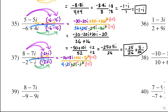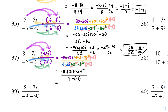Recall: the negative 2i and 2i cancel. The i squareds become negative 1. So we have negative 16 plus 8i plus 14i, and negative 7 times negative 1 is positive 7. All over 4 — those canceled — so we have 4 minus negative 1, which is 5. Up top: negative 16 plus 7 is negative 9, and 8i plus 14i is plus 22i.